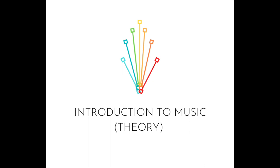And in A minor, the supertonic is? B. B, good. And how many half steps do we have from the tonic to the supertonic? Or in other words, how many half steps in a major second? Two. So from C to D: C, C sharp, D — two half steps.